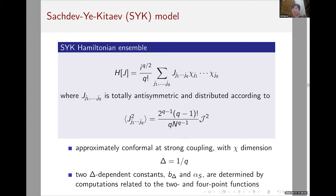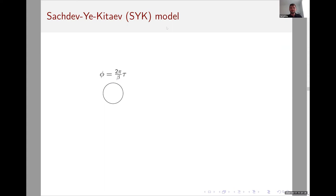There are two delta-dependent constants that I will use, B_delta and alpha_s, and these are determined in the literature. B_delta is determined quite simply from the two-point function, and alpha_s is determined by Maldacena and Stanford. B_delta and alpha_s are determined by computations in the model previously, and I'll just use these constants freely. I'll have an expression for B_delta later, but the important point is that when you see these numbers, they're just numbers. They don't have any particular crazy scaling with n or j.